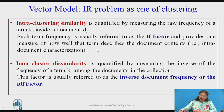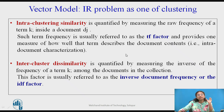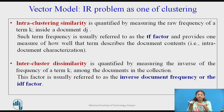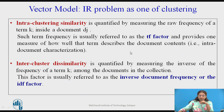How to use this in IR? Intra-cluster similarity is quantified by measuring the raw frequency of every term inside document Dj — this is called the term factor. One needs to provide how well a term describes a document: if an index term is describing that document, it is going to occur more times. This is how we define the raw frequency. Inter-cluster dissimilarity measures the inverse of the frequency of a term among the documents in the collection.